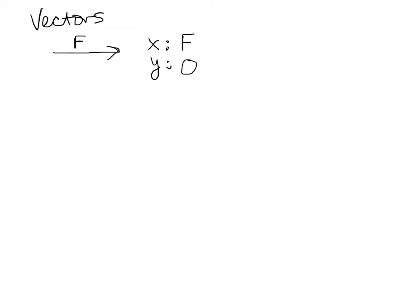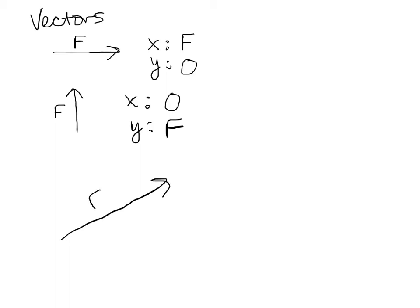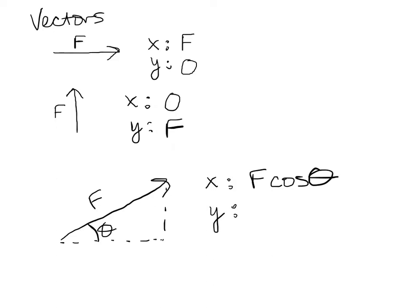If you have a purely vertical vector, what's its x component? Zero. And its y component is everything. So if you have a vector off at an angle, remember how to find the x component? Cosine. F cosine theta. And its y component is F sine theta.